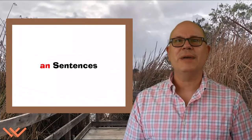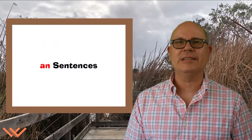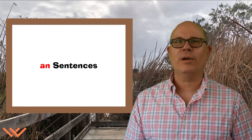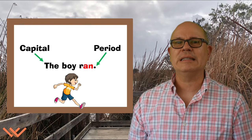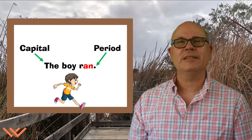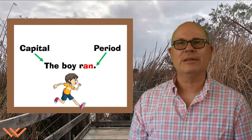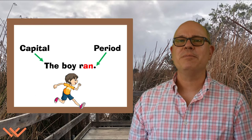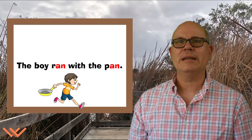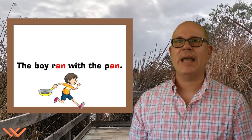Okay boys and girls, we're going to move on to Ann sentences — those are sentences that have Ann word family words. The first one is: the boy ran. Notice we're using a finger to space the words out, so you have proper spacing that makes it easier to read the sentence. We begin a sentence with a capital and end the sentence with a period. But wait, we can extend this sentence to: the boy ran with the pan. How many Ann word family words are in there?